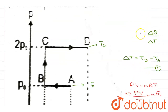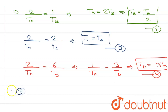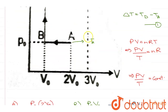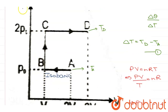The total heat exchange during the process ABCD, ΔQ_ABCD, equals ΔQ_AB + ΔQ_BC + ΔQ_CD. In process AB, pressure remains constant, so this process is isobaric. In process BC, volume remains constant, so this process is isochoric. In process CD, pressure remains constant, so this process is again isobaric.